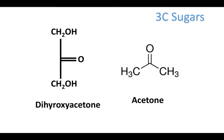We'll just start right off. First we're going to separate everything by the number of carbons in the sugar. So we're going to look at the 3-carbon, 4-carbon, 5, and 6-carbon sugars in that order and identify some ways to remember those and some trends that we'll find between different kinds.